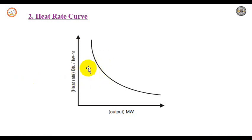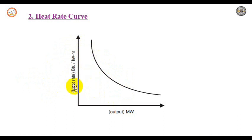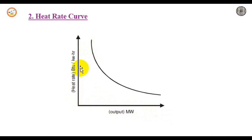The reciprocal of this heat rate is called fuel efficiency. The heat rate curve is a plot of the heat rate versus the output in megawatt. As the heat rate increases, the output decreases — both are inversely proportional.